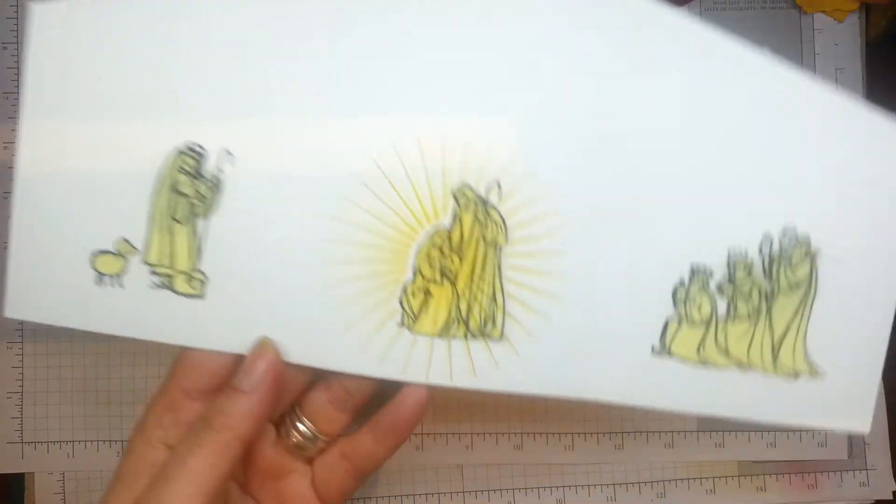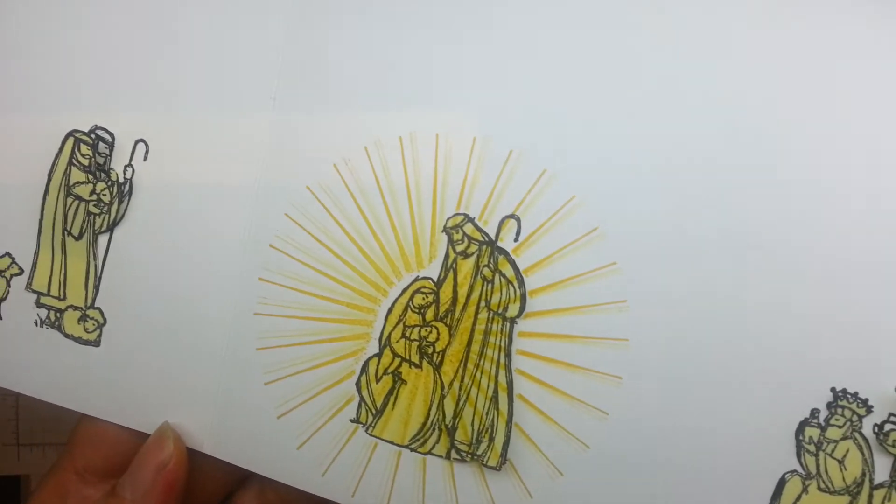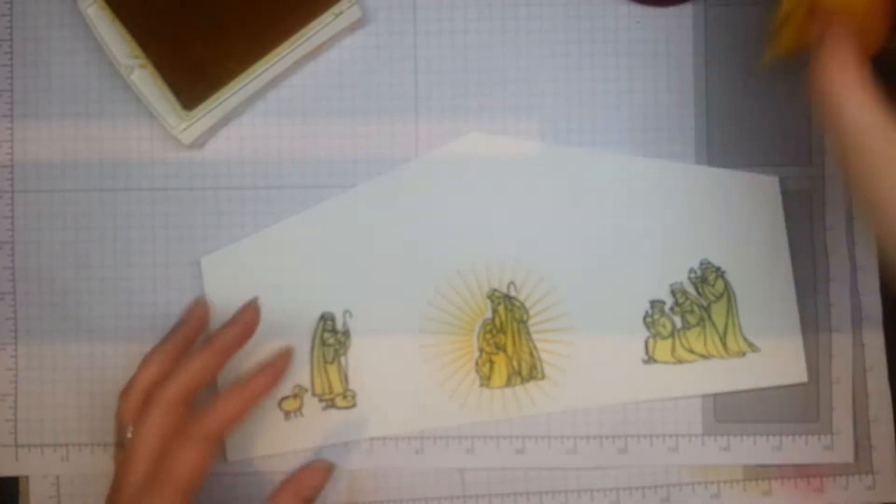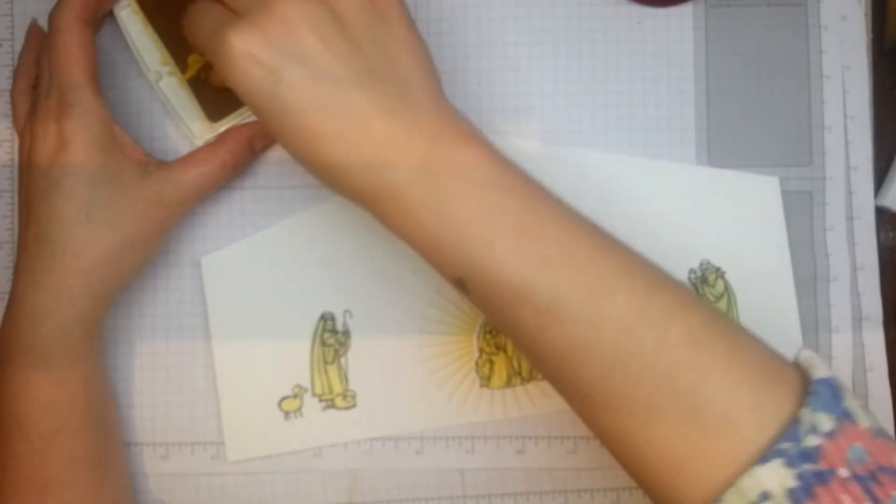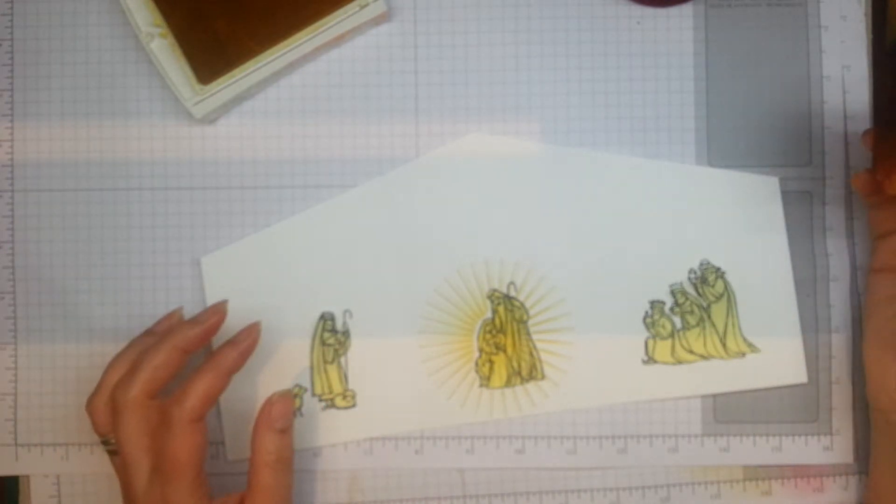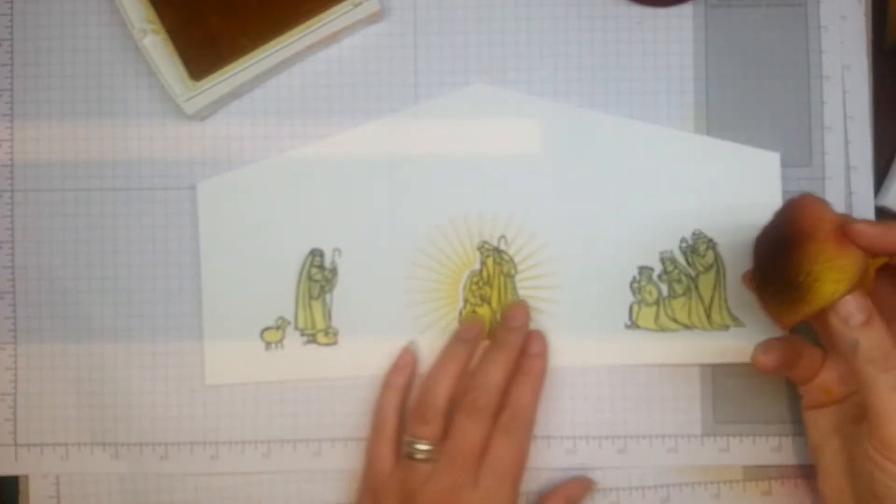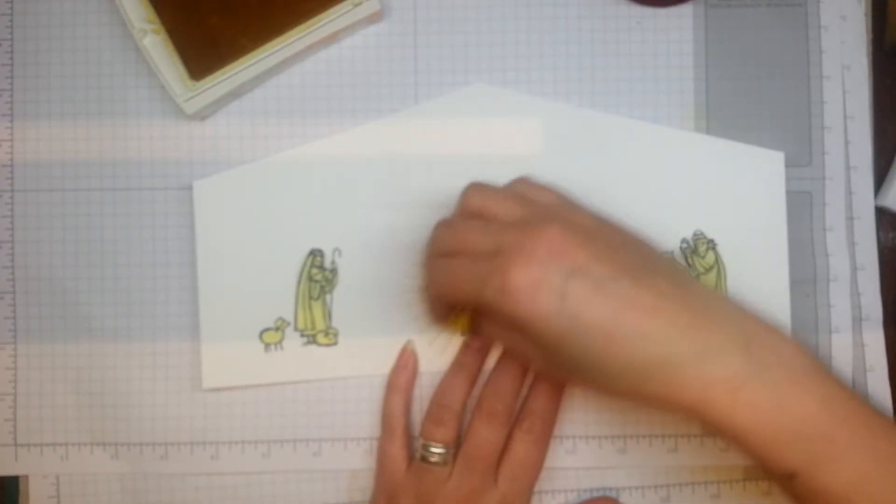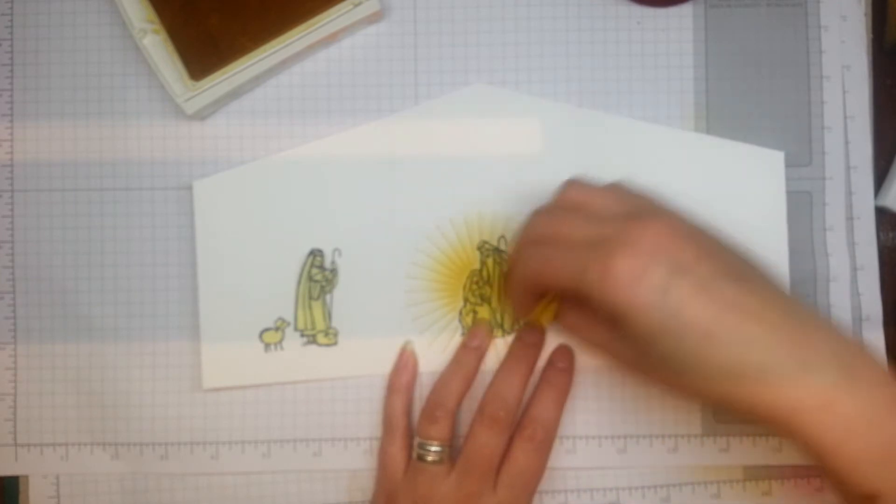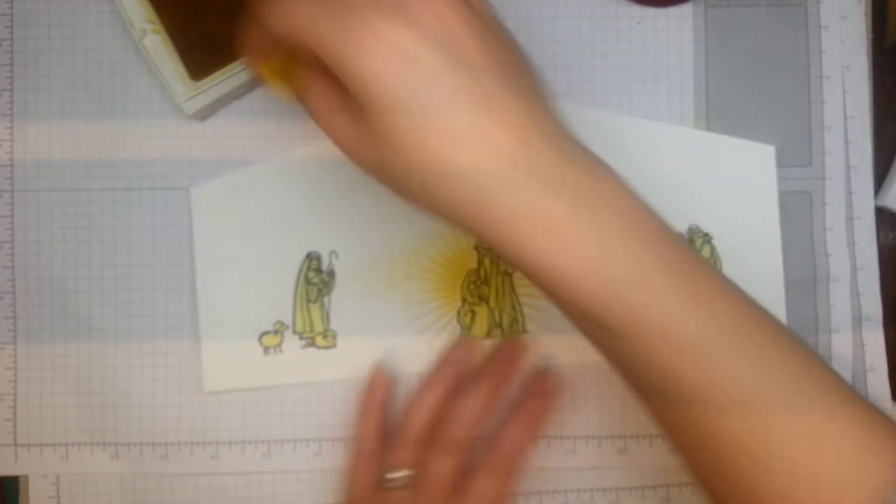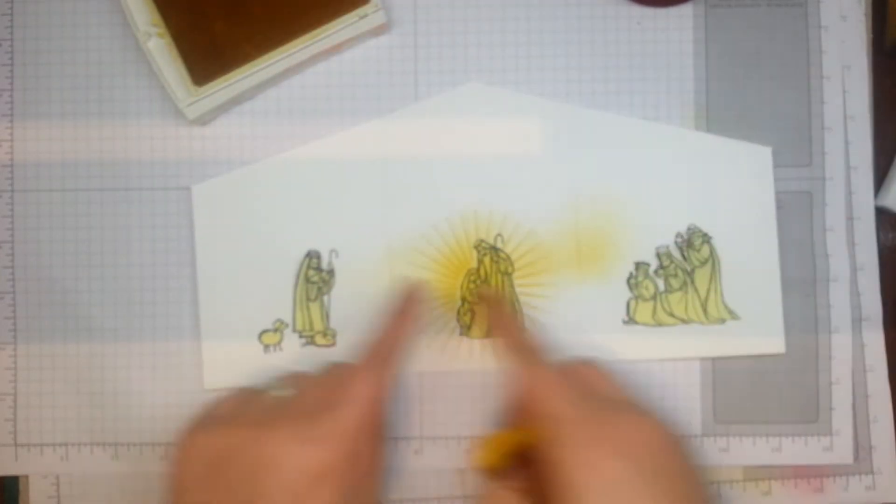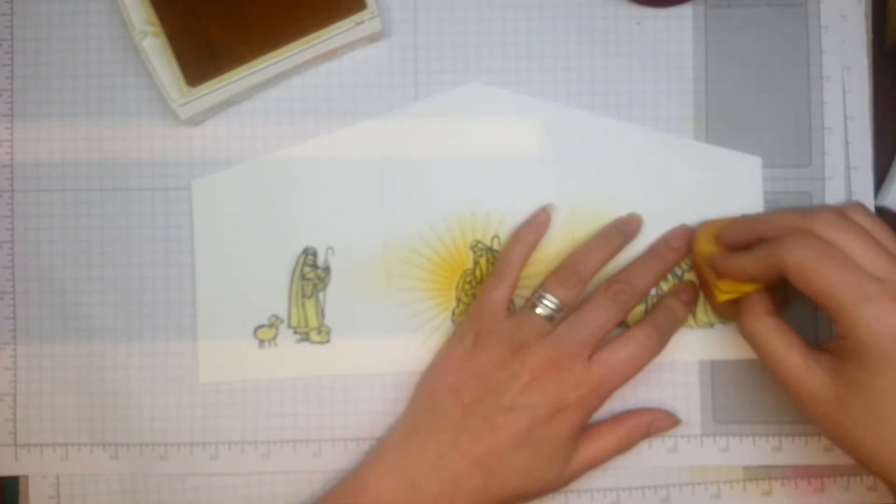You only have to move it very, very slightly to get the effect. So what you end up is with this kind of like slightly hazed effect around there. So then I'm going to get the Stampin' Up sponge. I don't know why I'm starting with yellow. I need to start with green actually. Oh no, I will start with yellow. It's best to do light first. I'm just going to sponge a little bit more around the actual figures.